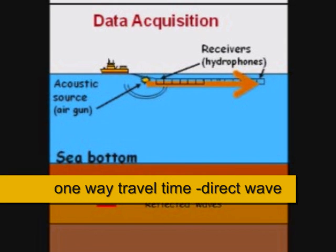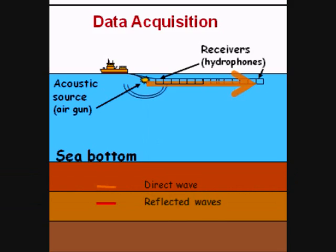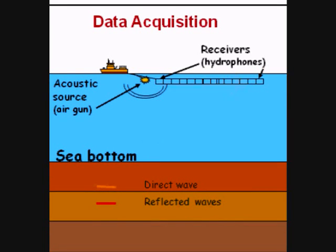Note that this is only one-way travel time. We are measuring only the time it took the wave to travel from the gun to the hydrophone. We now know the velocity of this direct wave traveling through water is 1,480 meters per second. The measurement of this yellow direct wave is one-way travel time because it did not reflect back. It did not bounce off of any boundaries. The direct wave travels straight from the gun to the hydrophone.